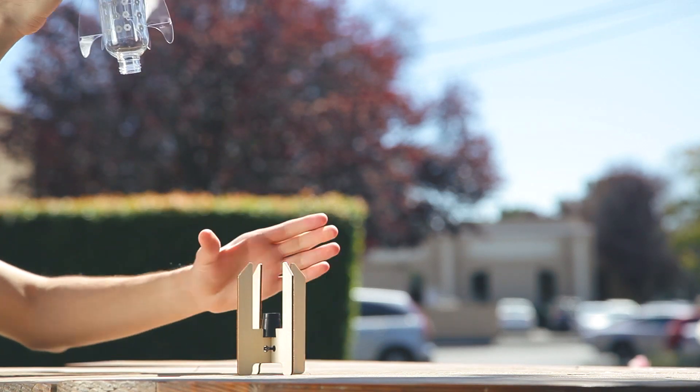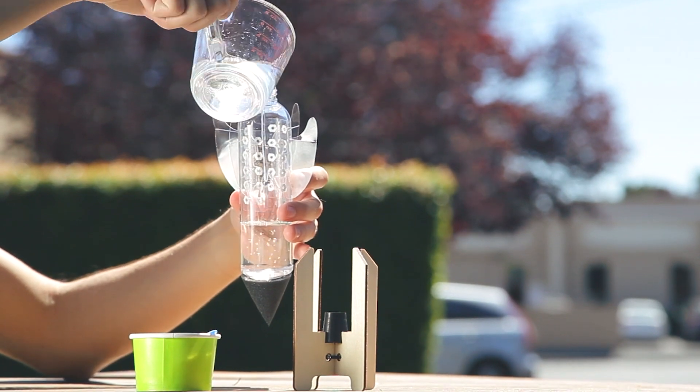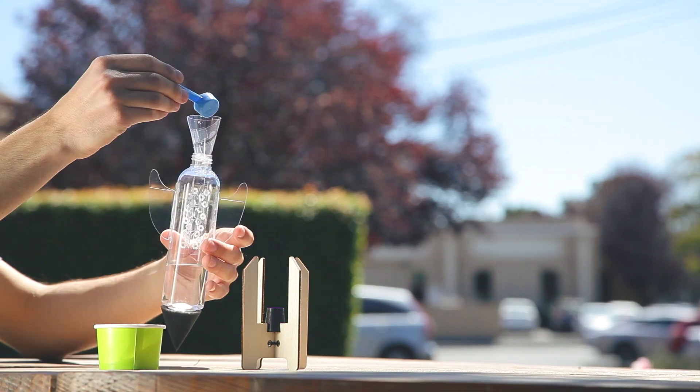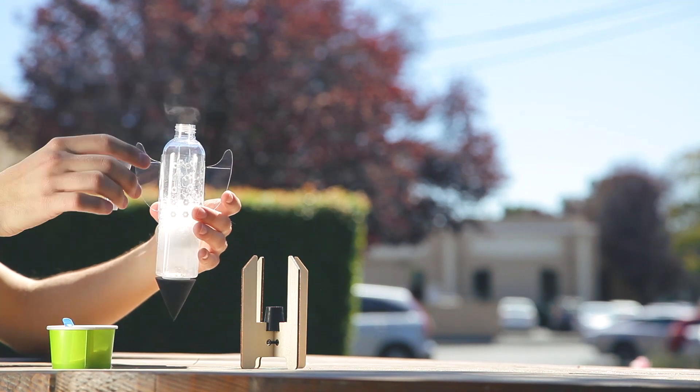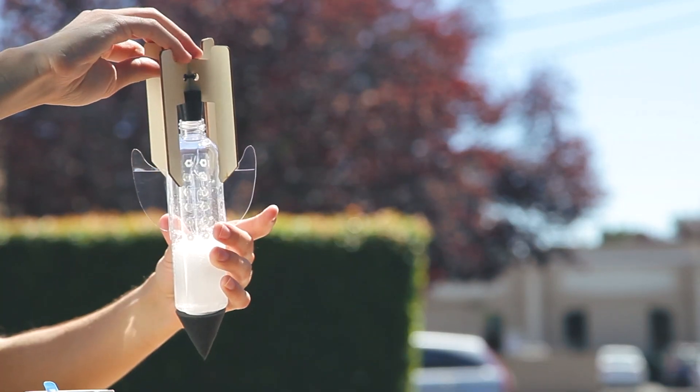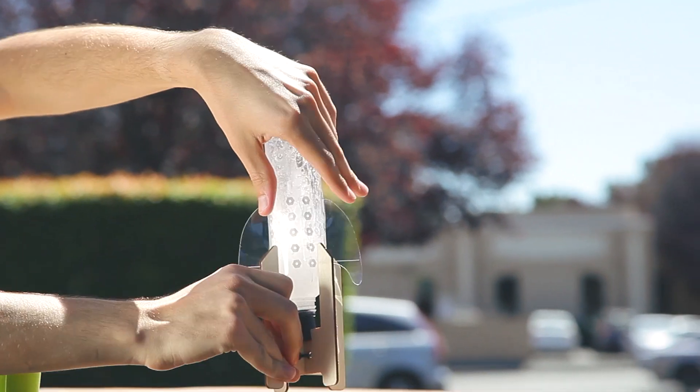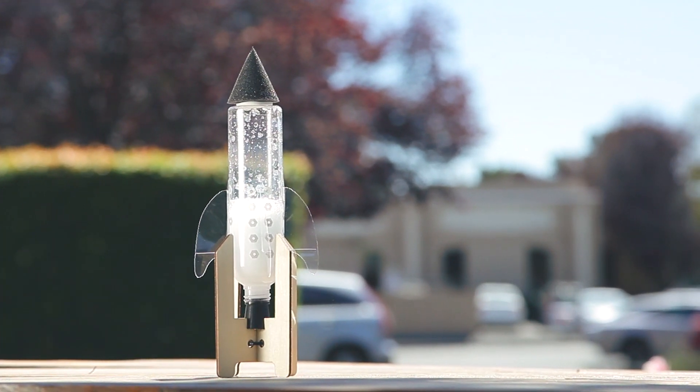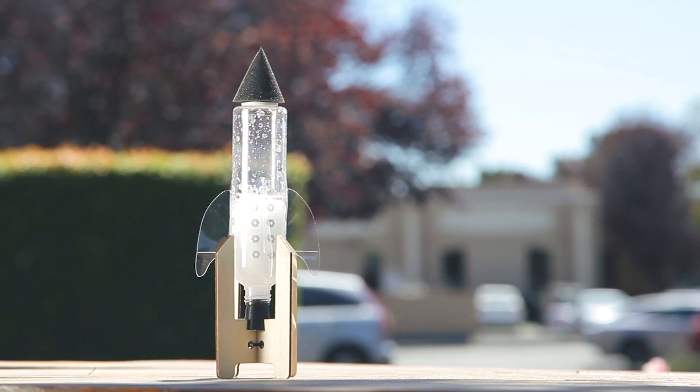Fill the rocket about a quarter full with water. Use the funnel to add one scoop of launch mixture into the water. Immediately press the launcher upside down onto the rocket. Flip your launcher over and set it down on a smooth surface. Now stand back and wait for your rocket to launch.